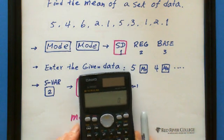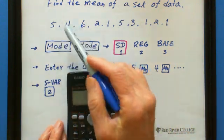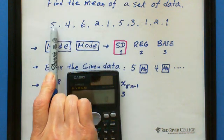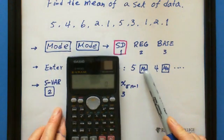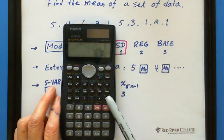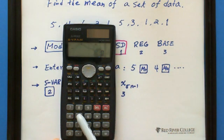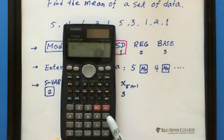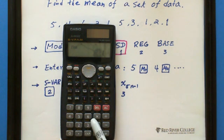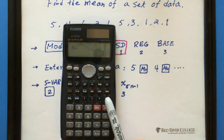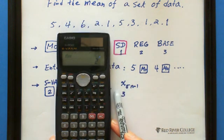The given data is 5. Every time you enter a number, you press and press here. So let's do it. 5, this one, and then 4, and press, press and have 6.